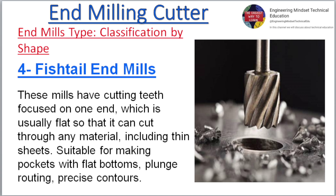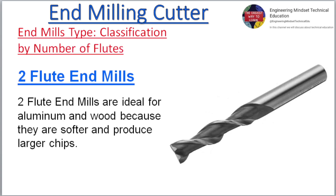4. Fishtail end mills: These mills have cutting teeth focused on one end, which is usually flat so that it can cut through any material, including thin sheets. Suitable for making pockets with flat bottoms, plunge routing, and precise contours.